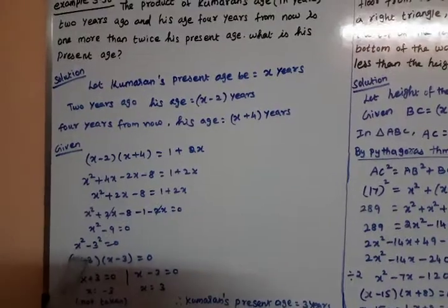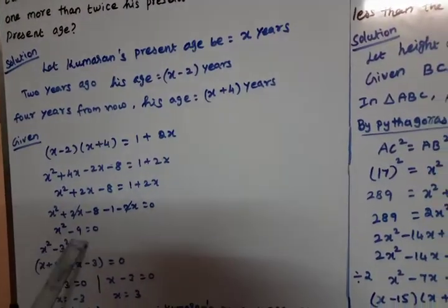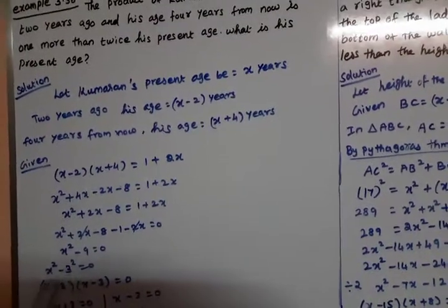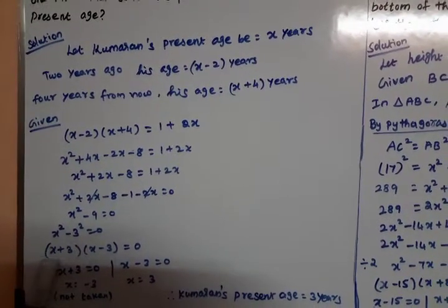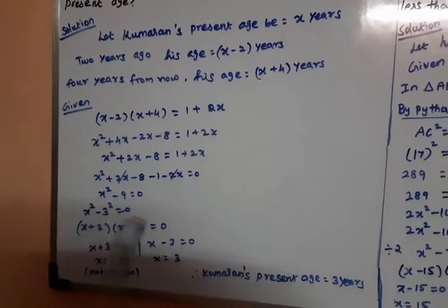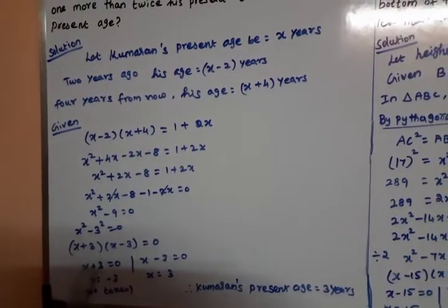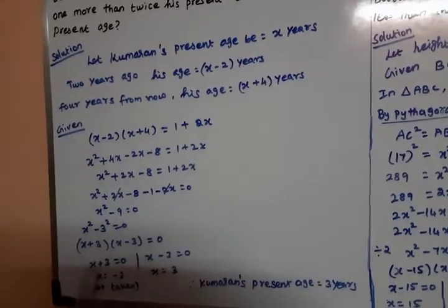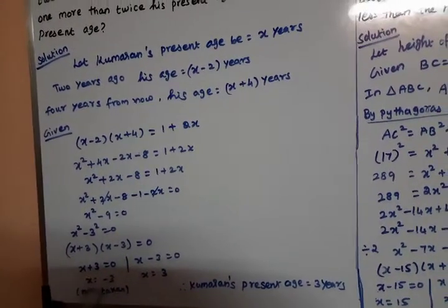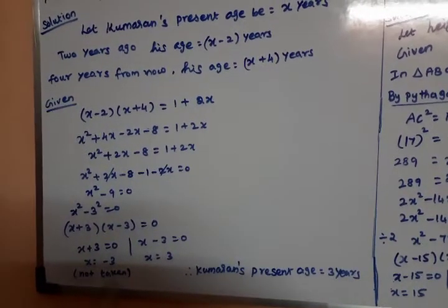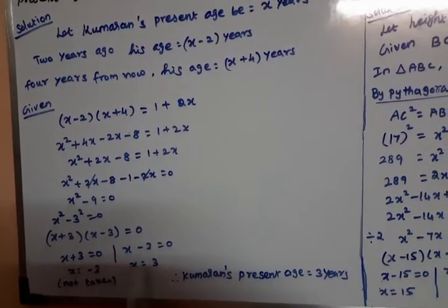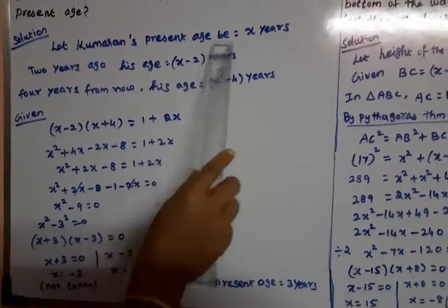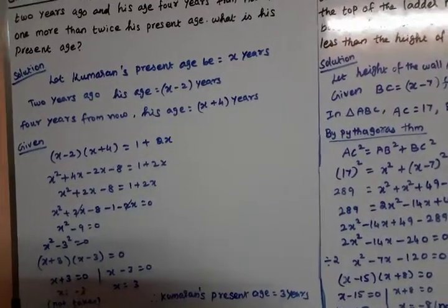It is a quadratic equation. Now X squared minus 9 equals X squared minus 3 squared, which factors using the a plus b, a minus b formula as (X plus 3)(X minus 3) equals 0. So X plus 3 equals 0 gives X equals minus 3, and X minus 3 equals 0 gives X equals 3. Negative age is rejected. Therefore, Kumaran's present age is 3 years.